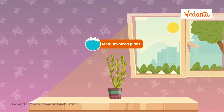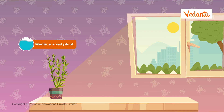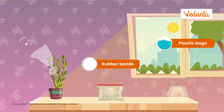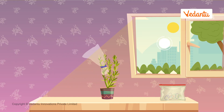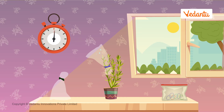Here's what you need: a medium sized plant, just like this one, some plastic bags and rubber bands. First, we tie a plastic bag around a leaf using a rubber band. Then take another plastic bag and simply close it, leaving it empty. Now, keep the plant as well as the empty plastic bag in sunlight for two hours.